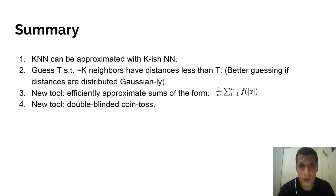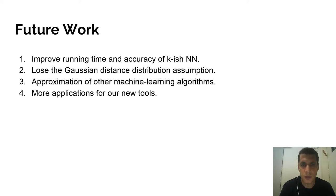To conclude: the choice of k can be loosened and replaced with some kappa close to k — we called this K-ish nearest neighbors. To make it efficient, we guess a threshold T such that with high probability there are approximately k neighbors with distance less than T. If the distances are close to Gaussian distribution, we showed how to better guess T using the average and average of squared distances. We introduced a new tool to approximate averages of functions of ciphertext using double-blinded coin tosses. In the future, we are going to improve our algorithm's running time and accuracy, extend it to not assume anything on the distribution of distances, and approximate more machine learning algorithms.